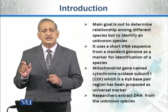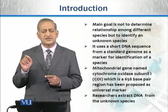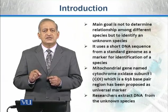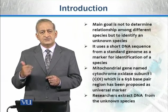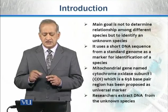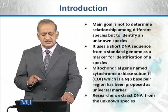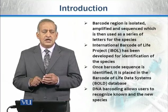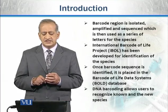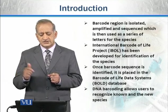For any species we want to identify, we take a sample and separate the DNA from it. The barcode region is then isolated and amplified, and the resulting nucleotide sequence is used as the species barcode.